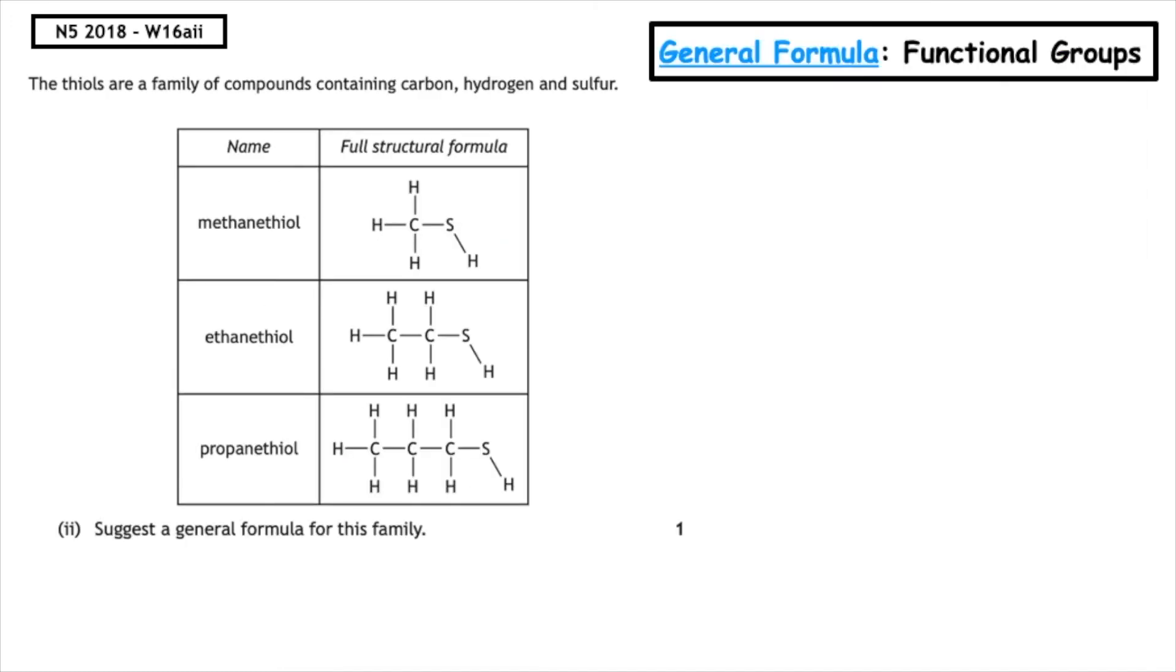This past paper question is from the National 5 2018 written exam. Thiols are a family of compounds containing carbon, hydrogen, and sulfur. Suggest a general formula for this family. Although this is not related to alcohols, it's the same procedure. First, identify the functional group. We can see it's the SH. We then write the molecular formula: CH3SH, C2H5SH, C3H7SH.